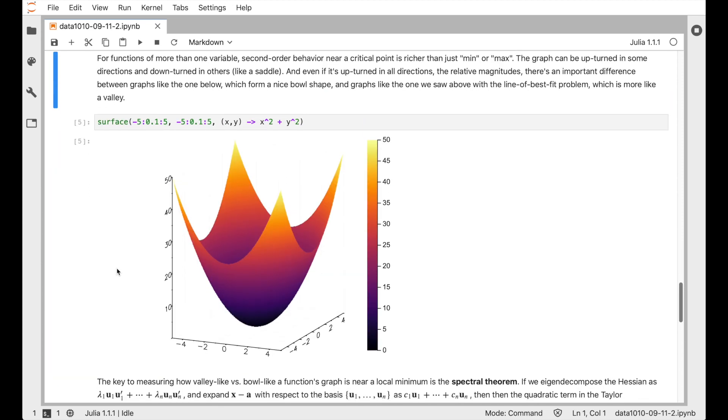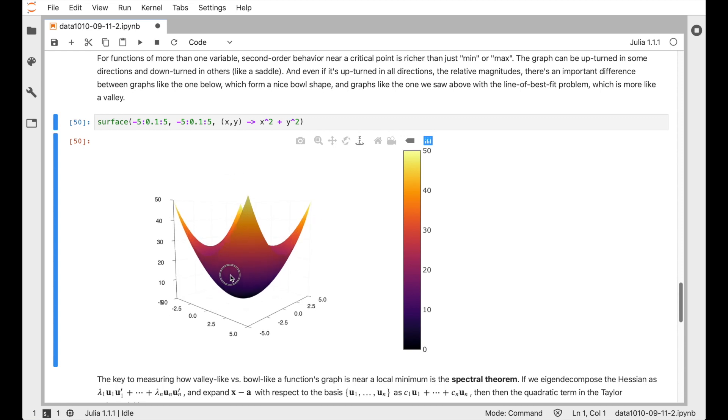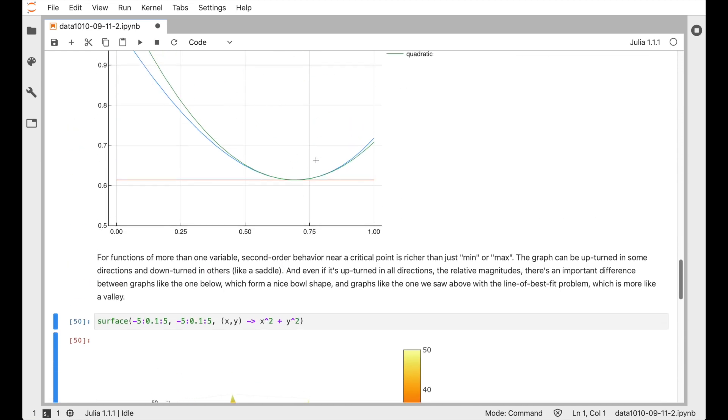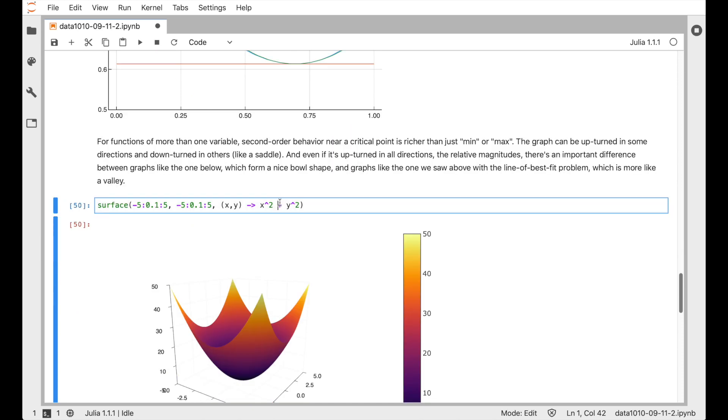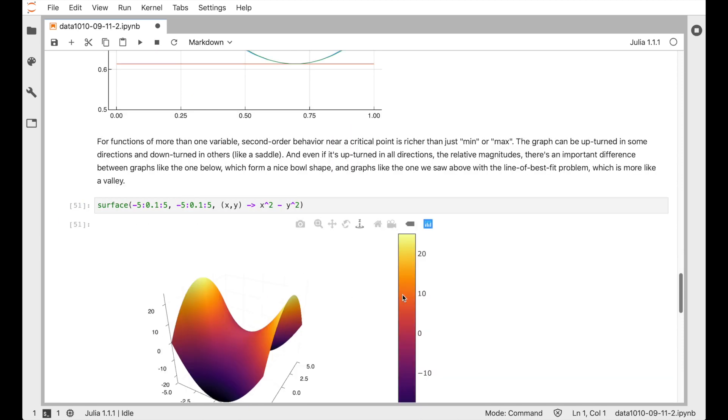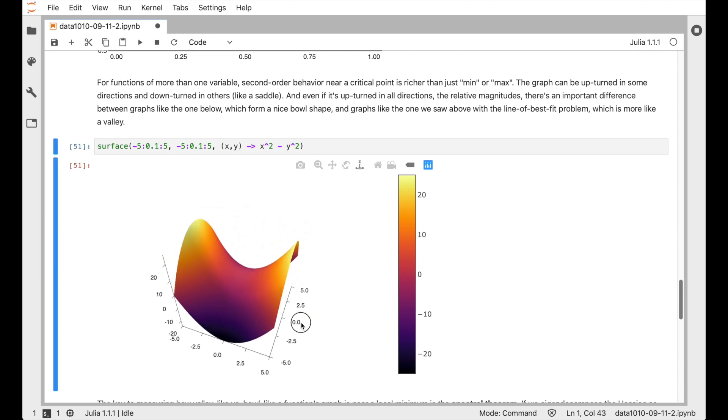So moving up from one dimension to two dimensions, we get some more interesting behavior. So you can have, of course, a bowl shape like this. That's very much analogous to the parabola, upturned parabola type shape here. You can also get saddle behavior where the function is upturned in one direction and downturned in the other direction. So for example, here looks like a saddle or like a Pringle chip or something. You have an upward slope in this direction and then a downward slope coming back the other way. And so you have neither a maximum nor a minimum here.